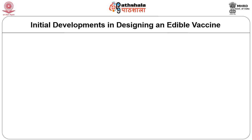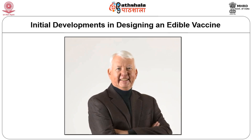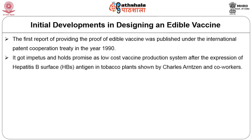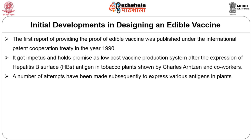Now we shall learn the initial developments in designing the edible vaccine. The concept of edible vaccine was developed in the early 1990s after attending a conference in New York organized by the World Health Organization. The first report providing proof of concept for edible vaccines was published under the International Patent Cooperation Treaty in 1990. However, it gained impetus as a low-cost vaccine production system after the expression of hepatitis B surface antigen in tobacco plants, as shown by Charles Arntzen and co-workers.